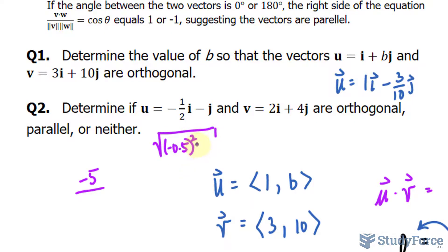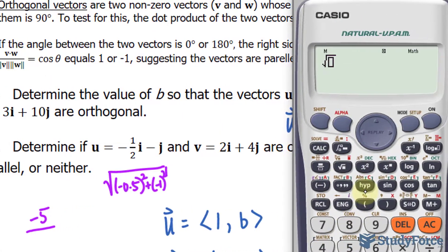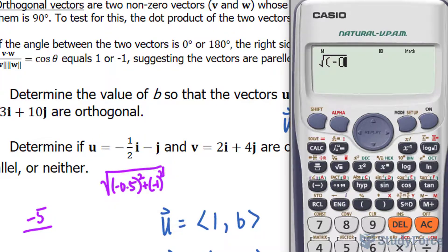Let's use our calculator. The square root of negative 0.5, squared, plus negative 1, raised to the power of 2.